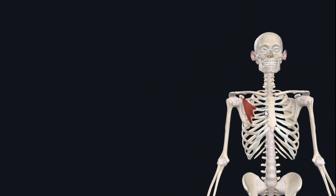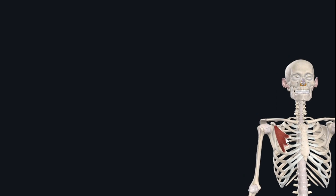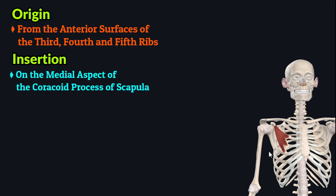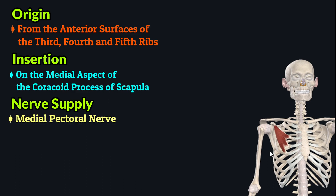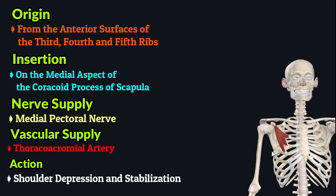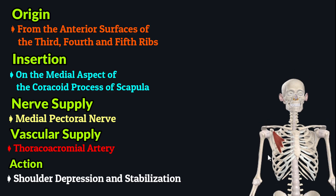To review the main points: the pectoralis minor muscle originates from the anterior surface of the third, fourth, and fifth ribs, and inserts on the coracoid process of the scapula. The medial pectoral nerve supplies this muscle, and the thoracoacromial artery provides its vascular supply. The muscle produces shoulder depression and stabilizes the shoulder girdle.